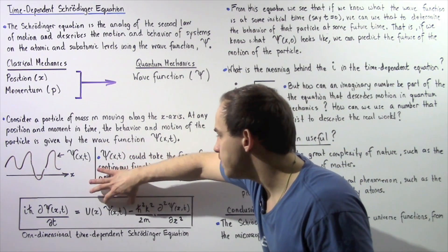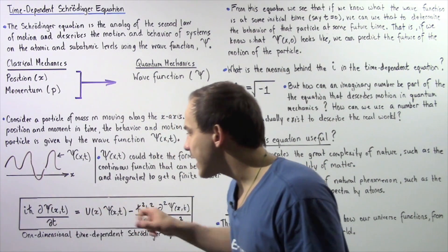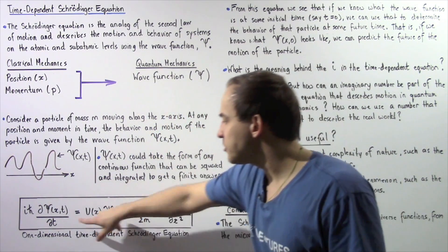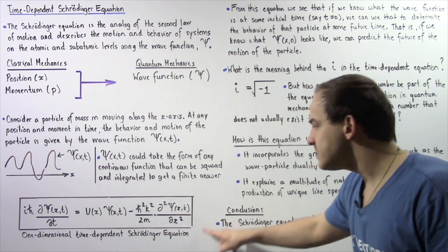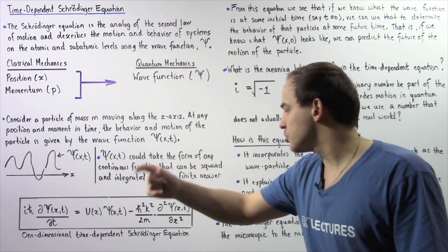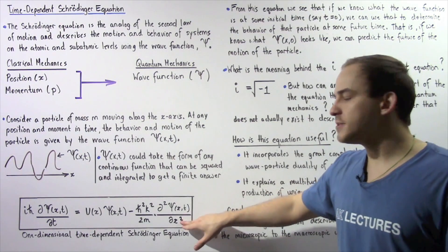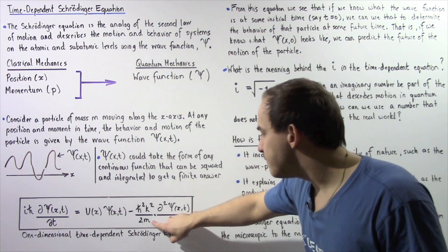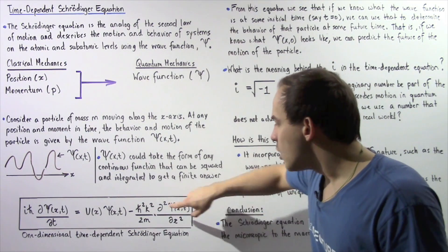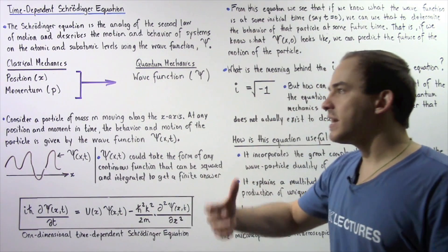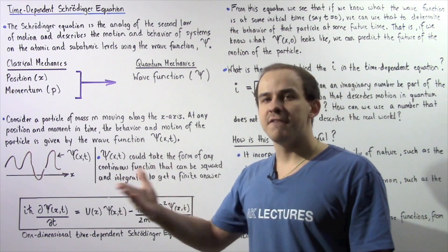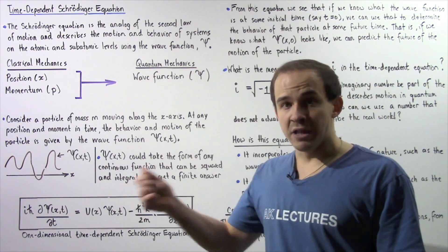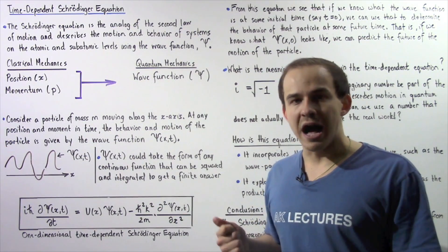So notice the wave function appears here. On this side we have the partial derivative of our wave function with respect to time, and on this side we have the second partial derivative of our wave function with respect to x. Now on this side we have mass appearing on the bottom. We have a k term, where k is equal to 2π divided by the wavelength, and this h-bar is simply equal to h — Planck's constant — divided by 2π.